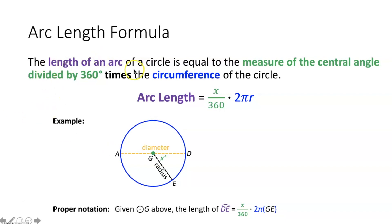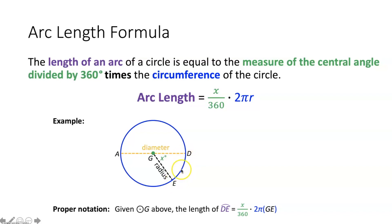The arc length formula says the length of an arc of a circle is equal to the measure of the central angle divided by 360 times the circumference of the circle — or X over 360 times 2πR, or X over 360 times πD. So if you don't want to calculate the entire circumference, just a portion of it — the length of an arc, say arc DE — you take the measure of the central angle of that arc, divide it by 360, and then multiply that by the circumference of the circle, 2πR.